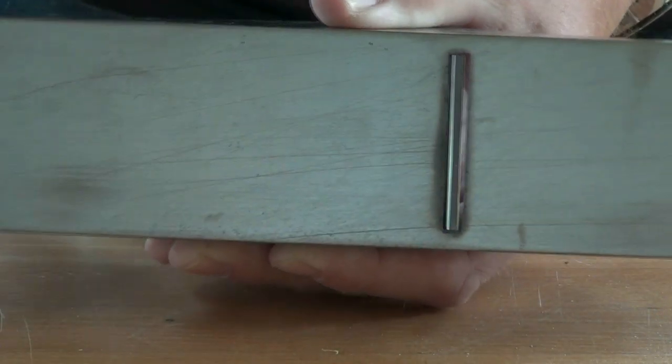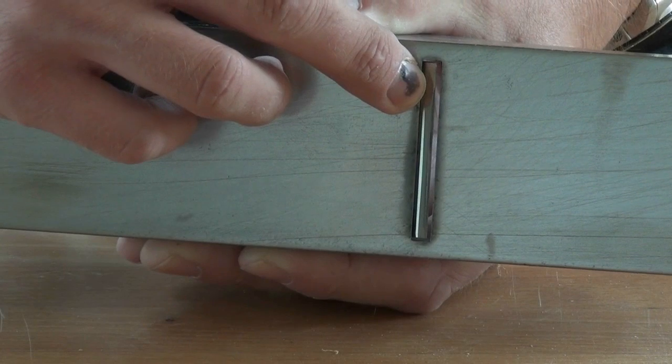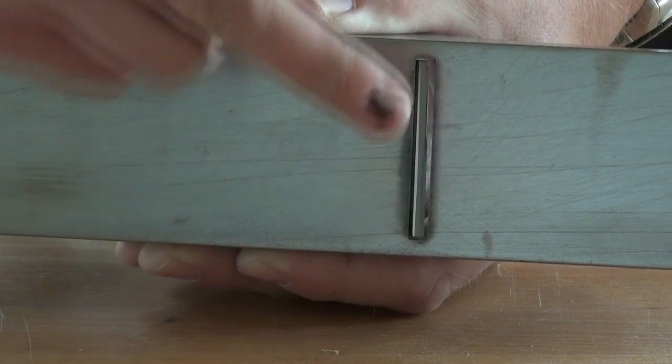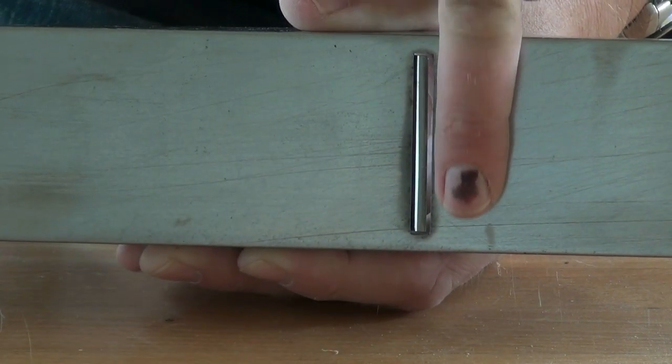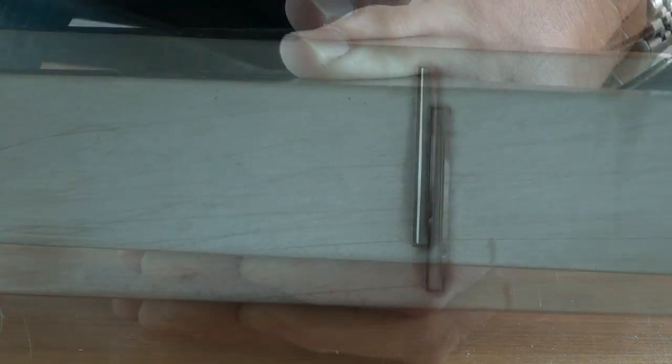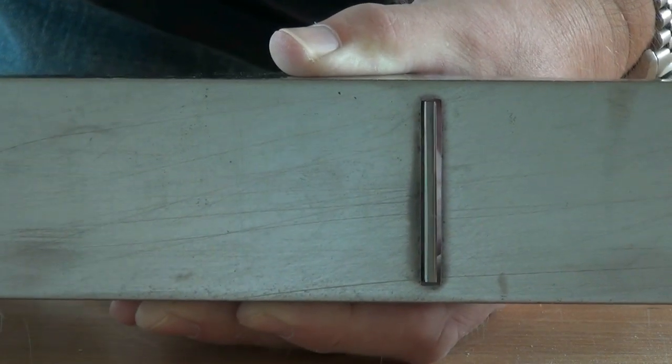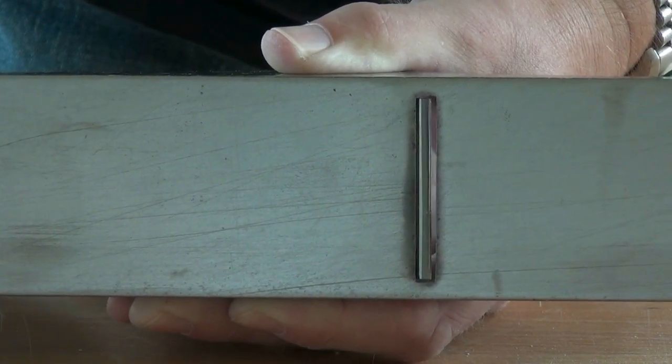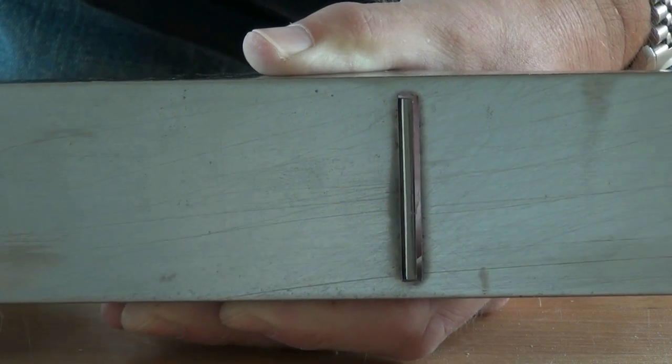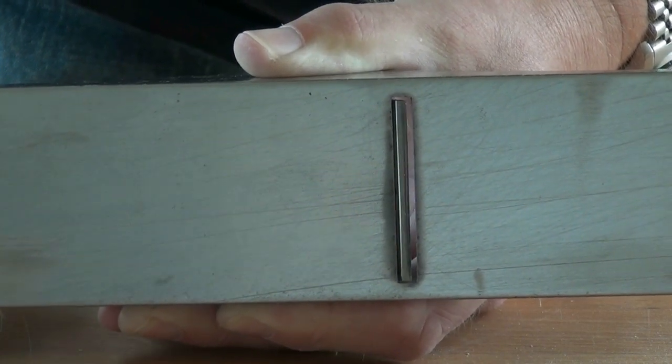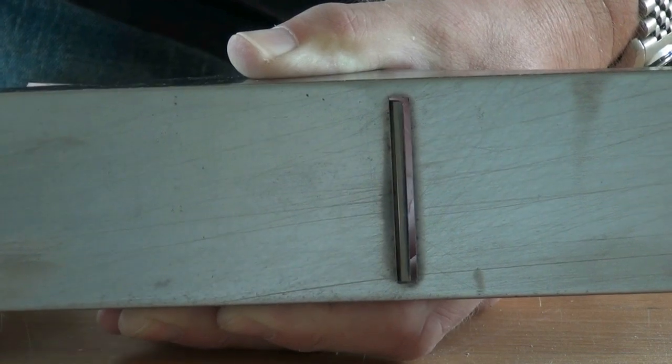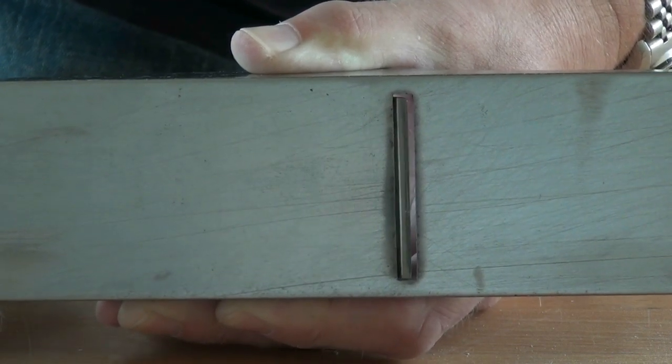I've popped the blade back in, and now we can see the gap between the front of the blade and the sole at the front of the mouth. And you should see as I turn the frog adjustment screw that we can open that gap up or we can close it down.